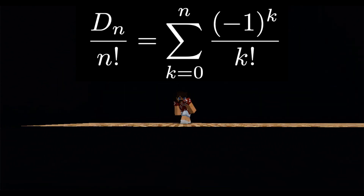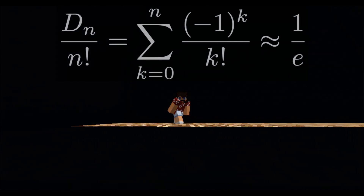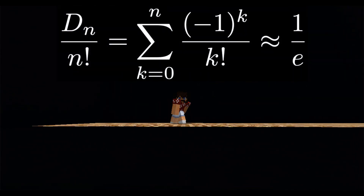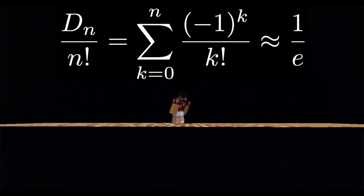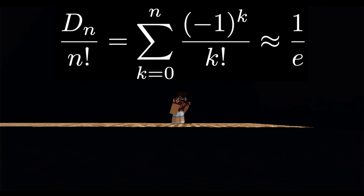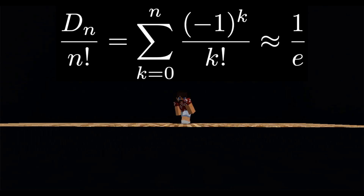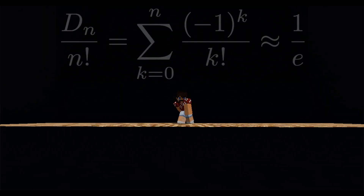Does this look familiar? This is approximately 1 over e. So we're going to use this sum with n equals 9 to approximate 1 over e.